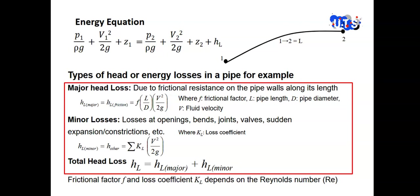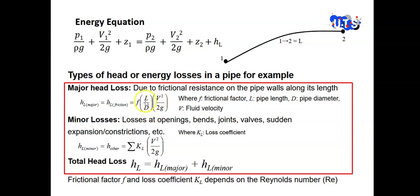We will start with our first problem. At the very beginning, I want you to look at this energy equation — you are familiar with it and know every term. Here, if you look at this right rectangular box, you can see the major head loss and the minor losses. Today we are going to use the head loss; we're going to solve a couple of problems. For the first problem, we need to consider the head loss. The major head loss is due to the frictional resistance on the pipe wall, and the expression is f·L/D · V²/2g, where f is the friction factor.